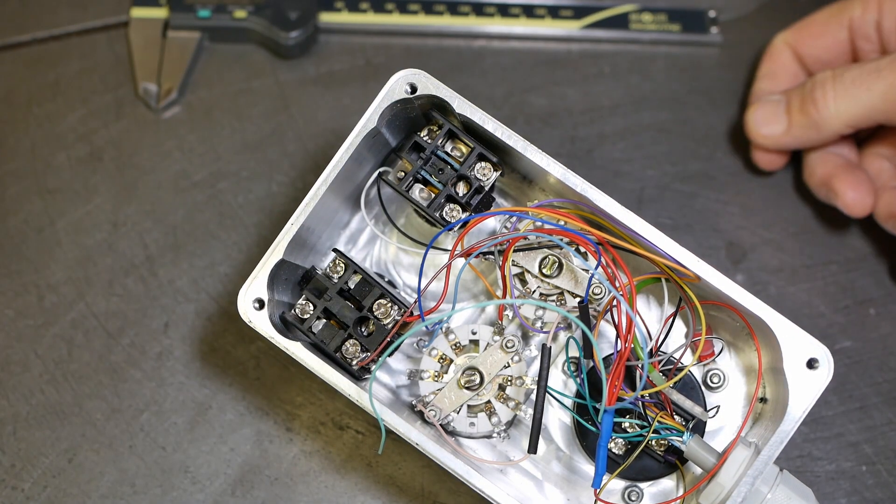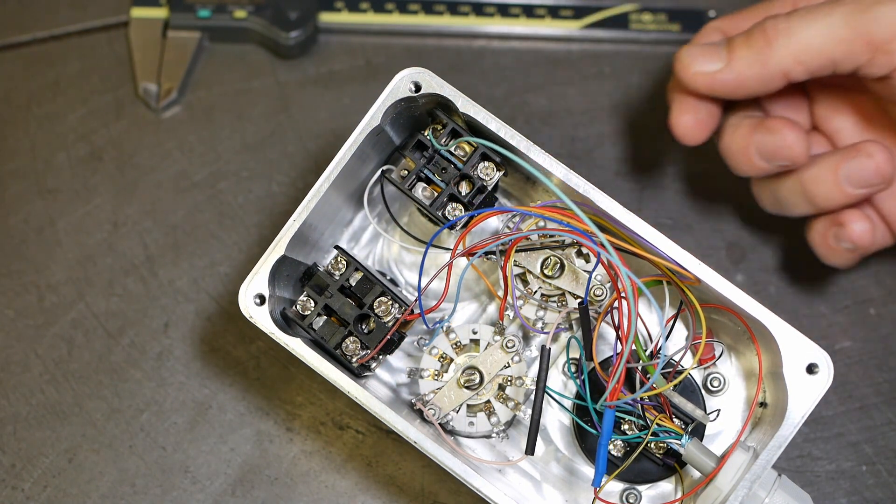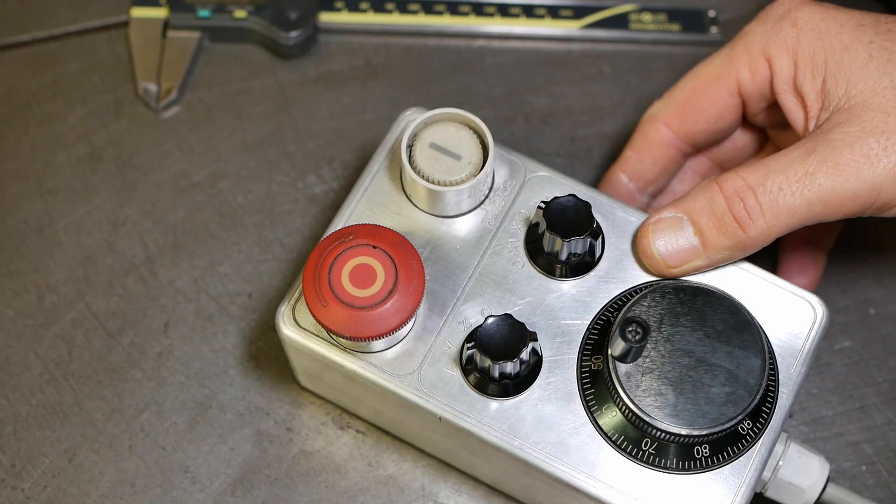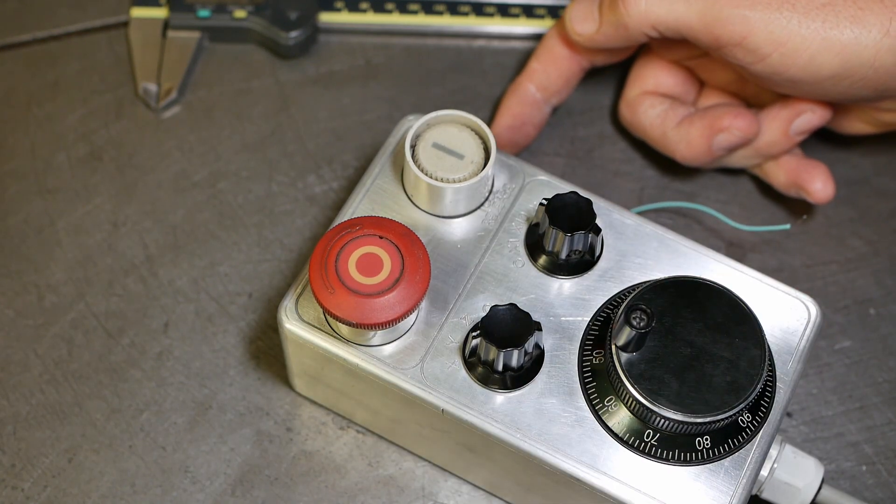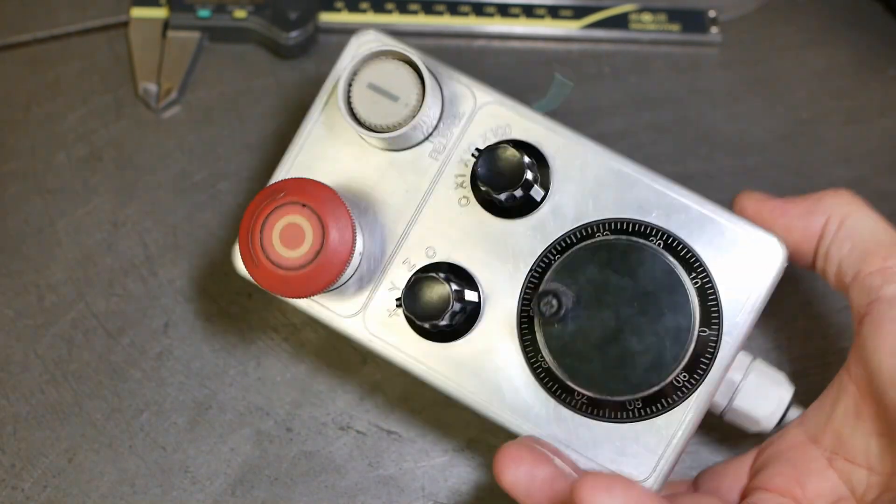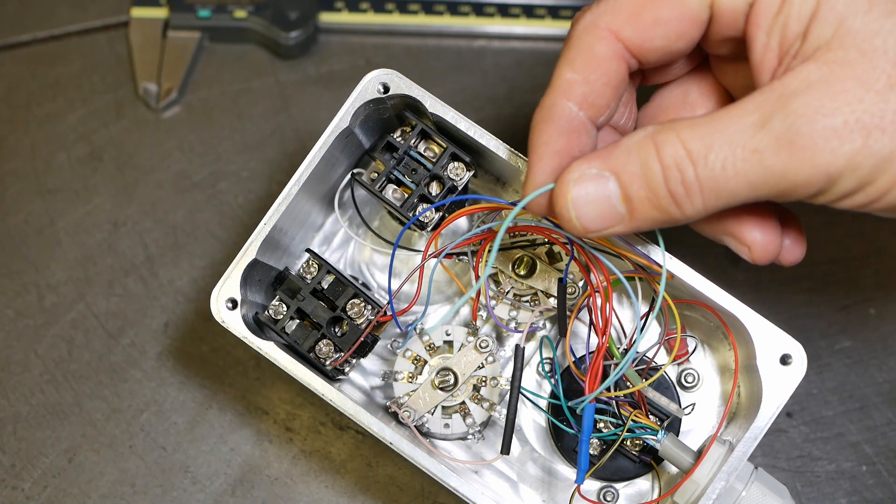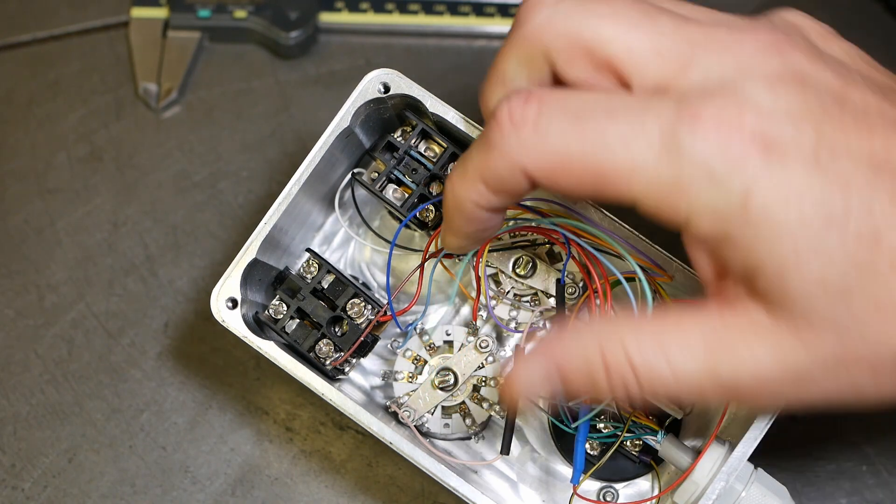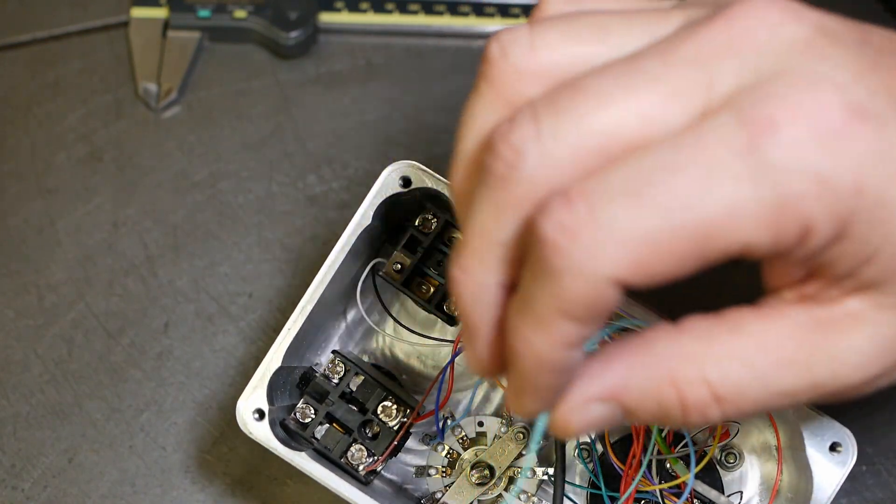Now it's probably not a good idea to show the inside of my pendant because it's a rat's nest, but when I connected the pendant, the communication between the 7i77 Mesa card and its daughter card stopped working, and I've now isolated it to this wire. This wire is supposed to be one of the jog increments, but as soon as I connect this up it causes a fault.